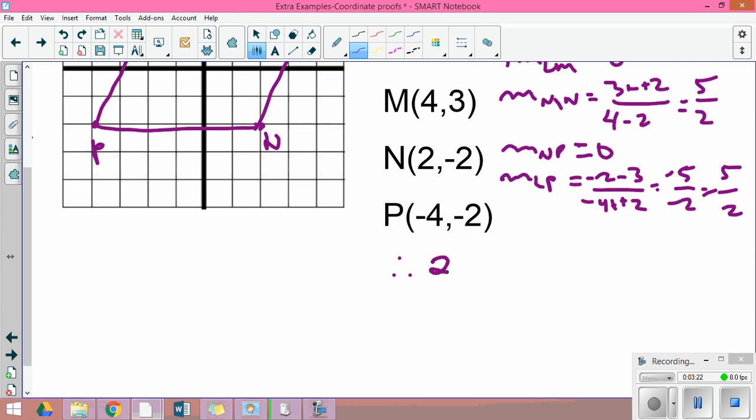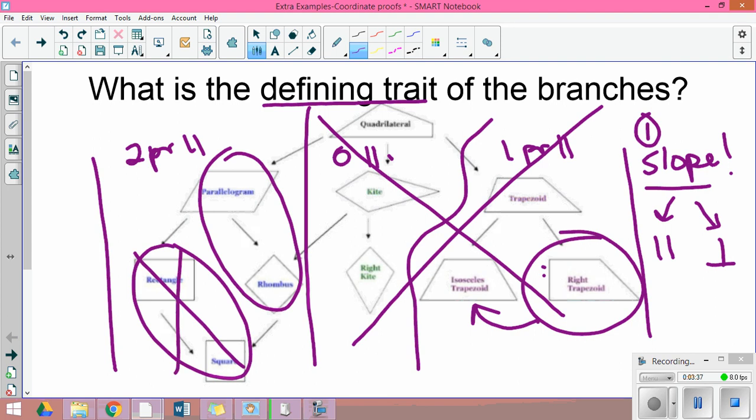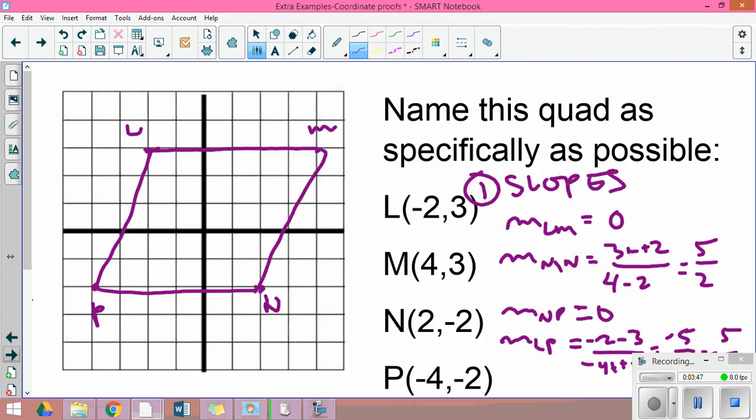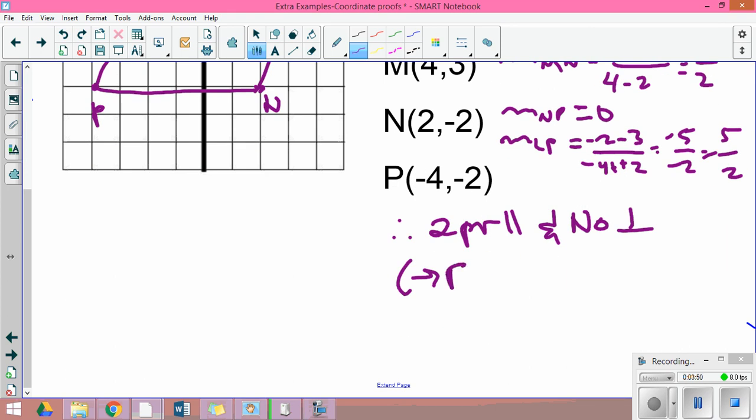Therefore, I have two pair parallel and no perpendicular because I don't have any opposite reciprocals. In my head, I now know if I don't have perpendicular, I can't have a rectangle or square. I have to tell the difference between a parallelogram and a rhombus, and that has to do with side lengths.